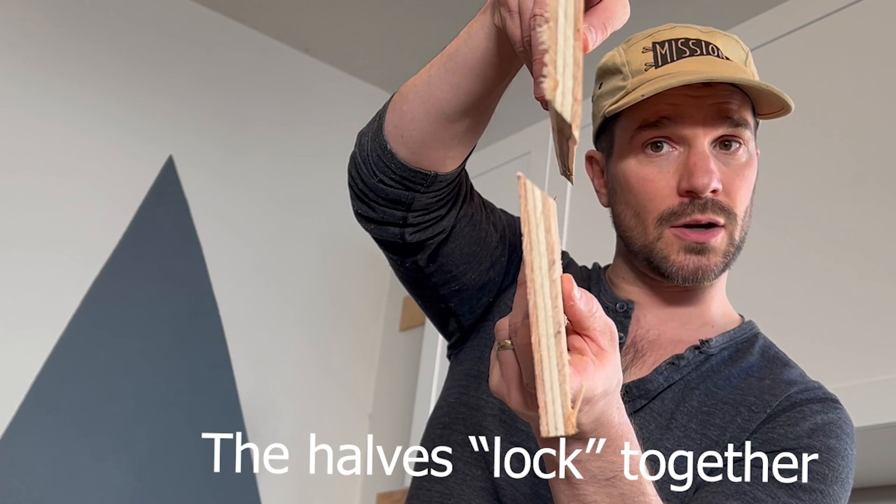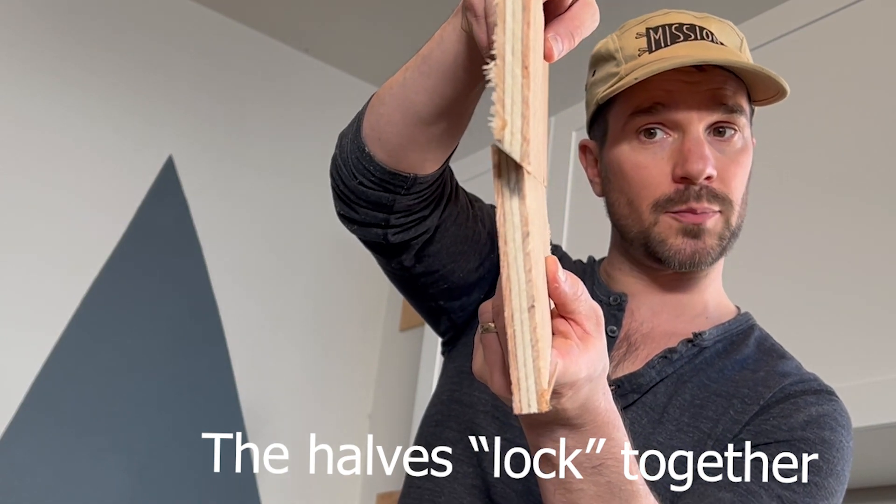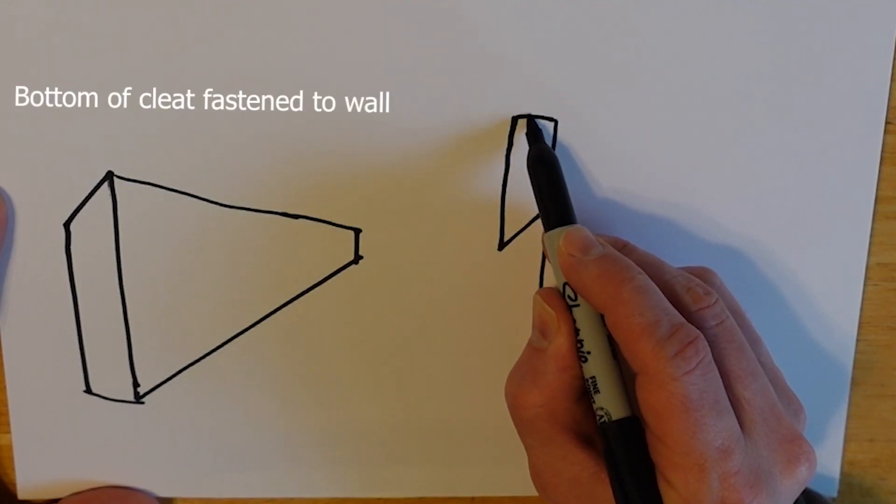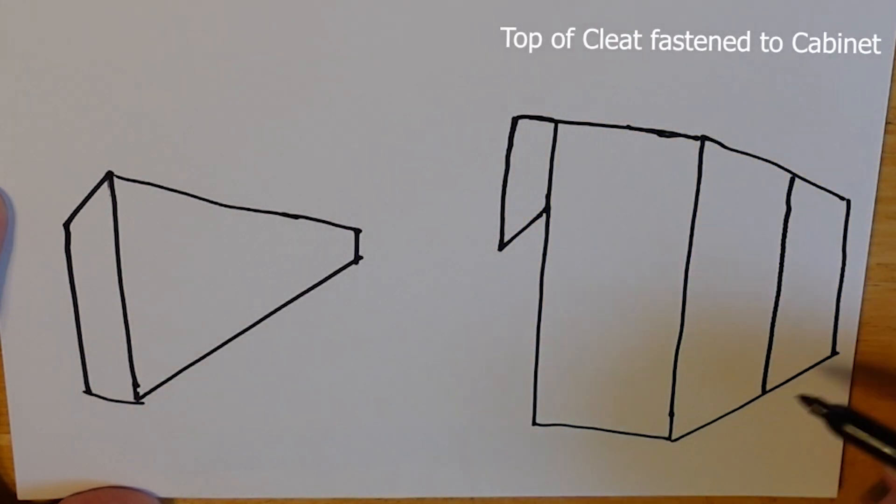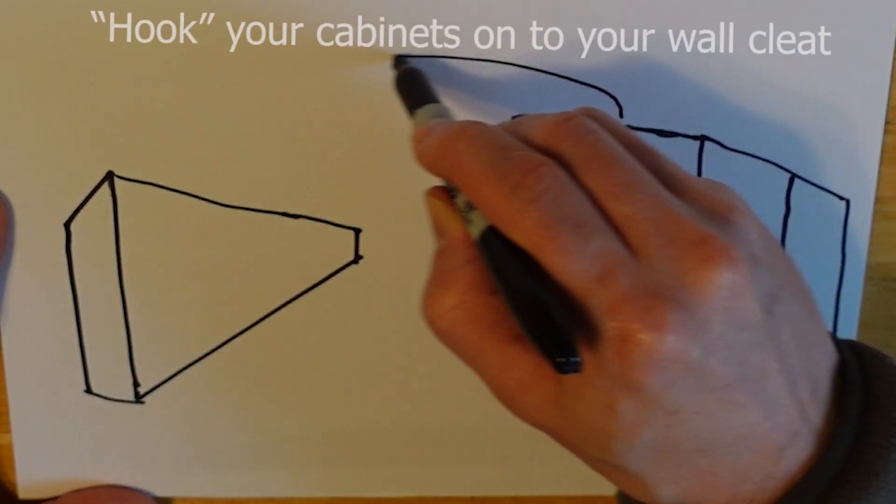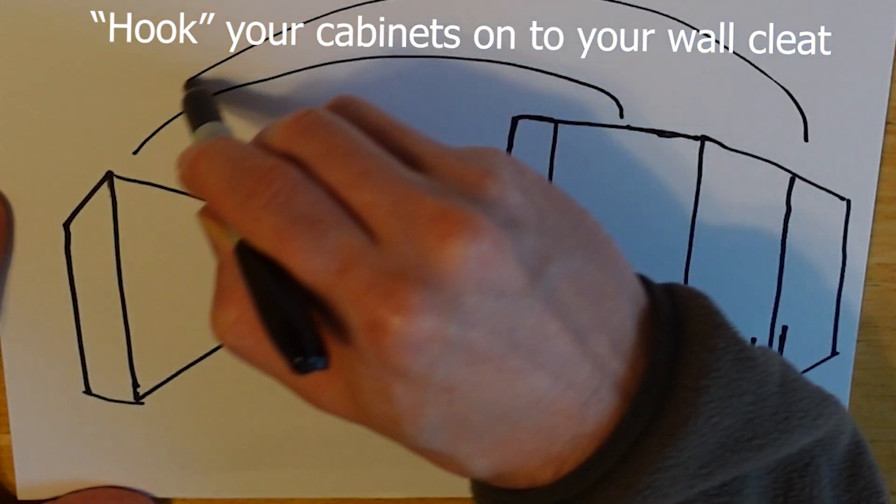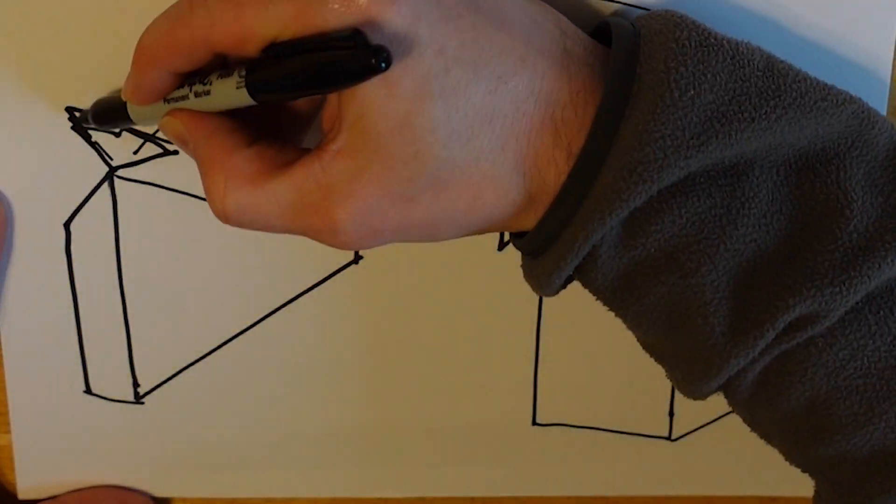The French cleat design has two halves that lock together. The wall cleat on the left has the hook pointing up, and you attach the other half to the back side of the cabinet. When you lift the cabinet, you hook it into the wall.